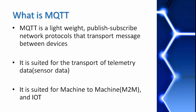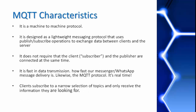The protocol runs over TCP/IP or other network protocols that provide lossless and bidirectional connections. MQTT has unique features to be noted. You can hardly find these in other protocols — as mentioned, it is a machine to machine protocol. It is designed as a lightweight messaging protocol that uses publish-subscribe operation to exchange data between client and server. It does not require that the client and the publisher are connected at the same time. It is fast in data transmission, just like messenger and WhatsApp message delivery — it is real time. Clients subscribe to a narrow selection of topics and only receive the information they are looking for. That is why MQTT is one of the most commonly used protocols in IoT projects.